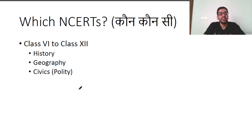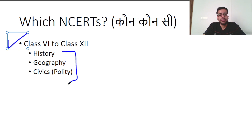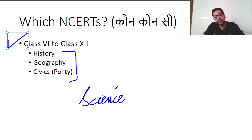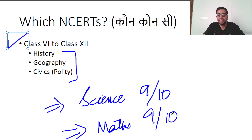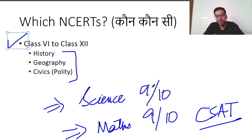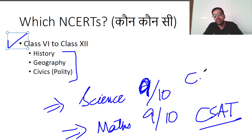Which NCERTs do you need to do? The most important are Class 6 to 12 History, Geography, and Polity. You can also include Science for Class 9 and 10, and Maths for 9 and 10. Maths is for CSAT and Science is for understanding the basics. Beyond that, you will also need current affairs. This is not sufficient on its own, but it is a start.